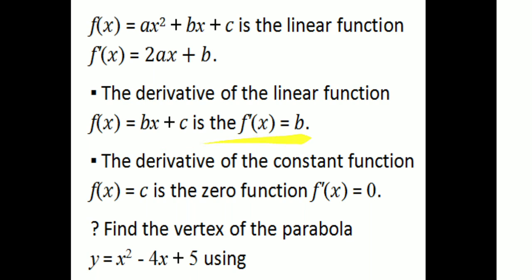The derivative of the function f of x equals bx plus c is f prime equals b. Here bx gives derivative b since derivation of x is equal to 1 and the derivation of a constant is equal to 0. That is why the derivative of the constant function f equals c is the zero function f prime equals 0. Then we apply the quadratic function rule.